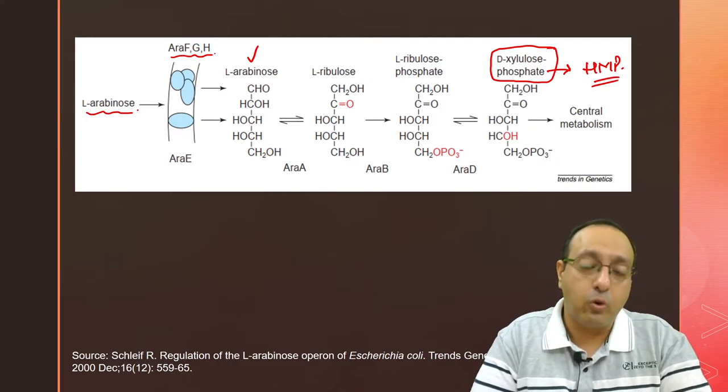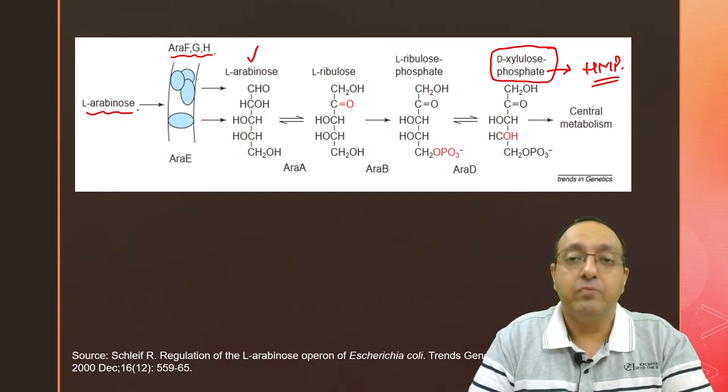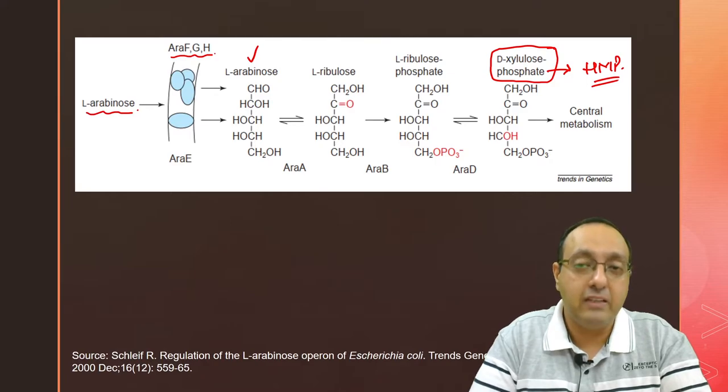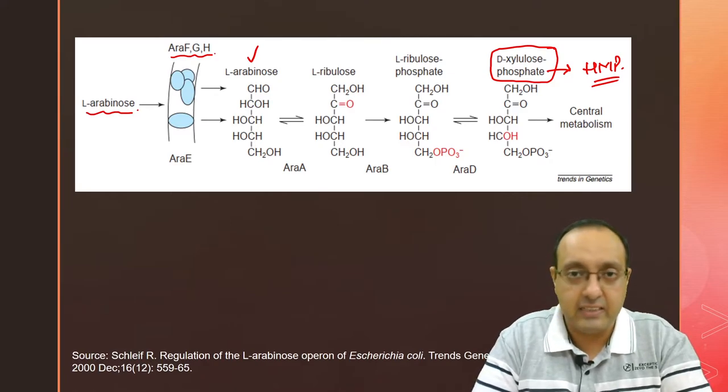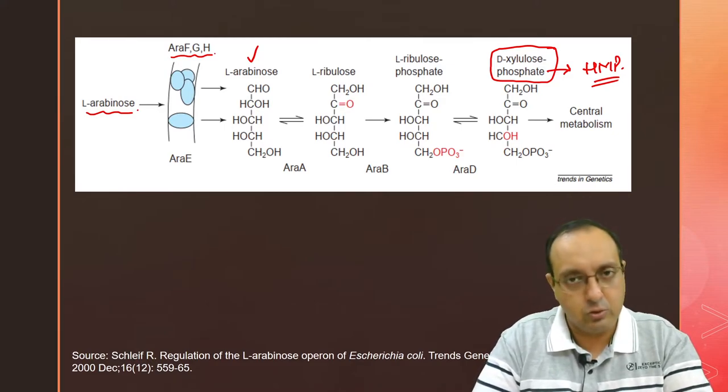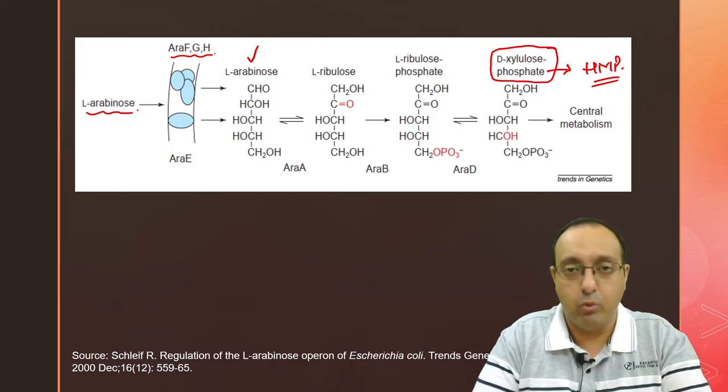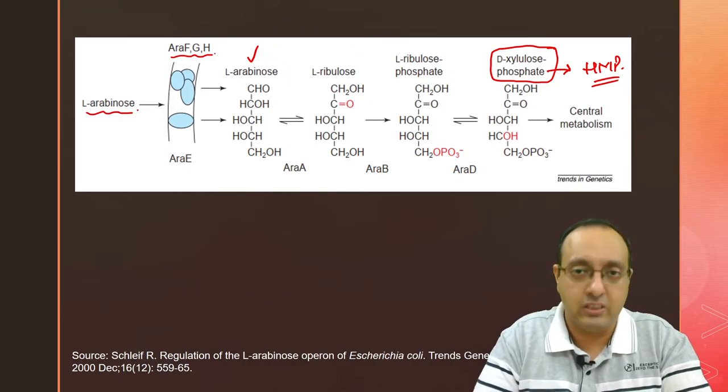Arabinose operon needs to be regulated just like lac operon, just like trp operon, because the cells don't want to expend energy in making these enzymes and transporters if there is no need. If glucose is abundant or some other carbon source is abundant, they don't want to spend energy on making these araBAD proteins. That's what the regulation is about.